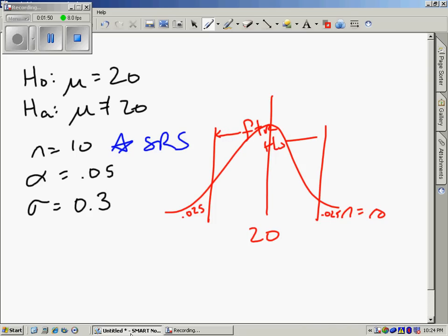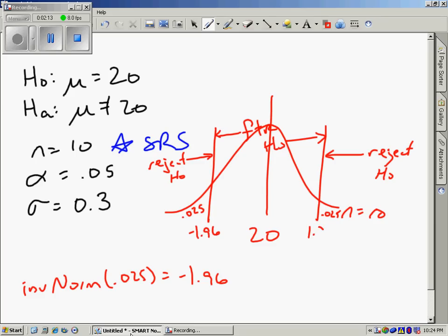If you take your calculator and you inverse norm 0.025, you get negative 1.96. So this is negative 1.96 and this is 1.96.